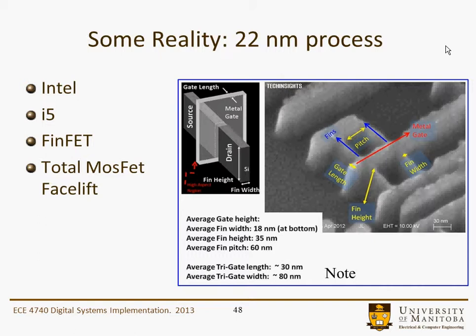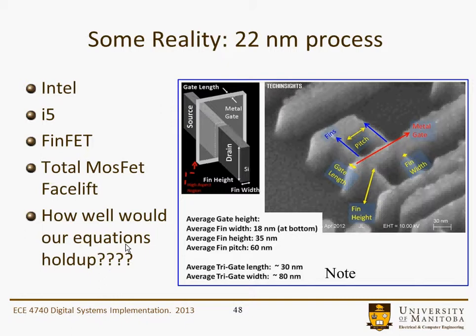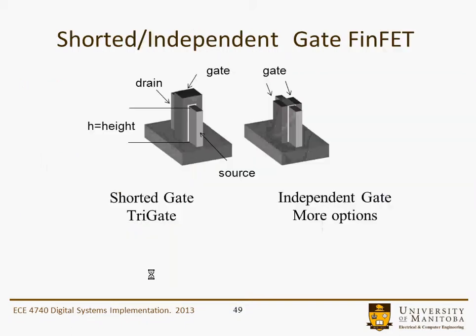The width of the fin is illustrated there, and the pitch is the distance between the fins. The gate length is still as we'd expect. The fin height is going to be related to the width of our transistor. In a particular example, the gate height is 35 nanometers, and as a consequence the total gate width is about 80 nanometers — 35 nanometers on the side and then a little bit across the top. That would correspond to the W of our planar device. Our equations weren't very good in the first place, so they're probably still not very good. Two different FinFET types are shown: one is called independent gate, and the other is the shorted gate, which is probably a little more common.